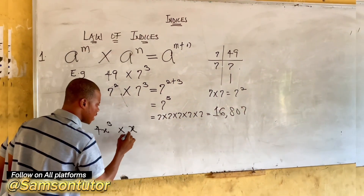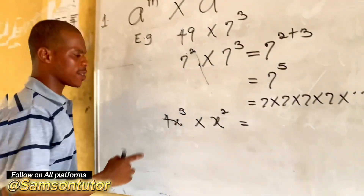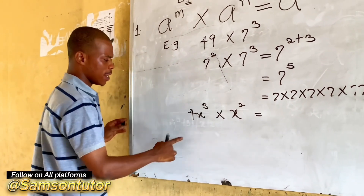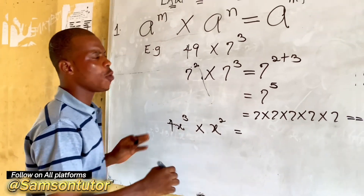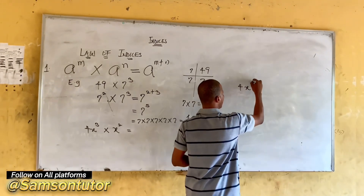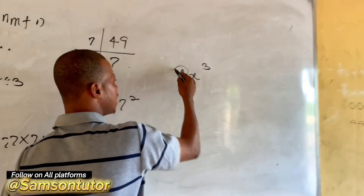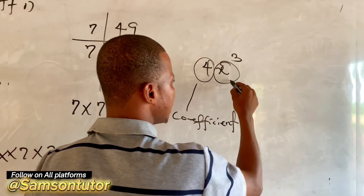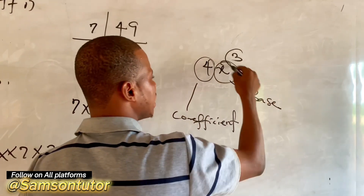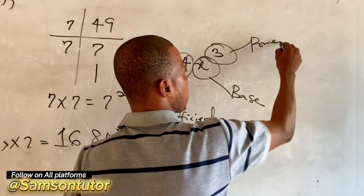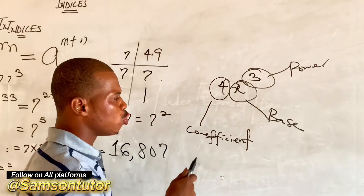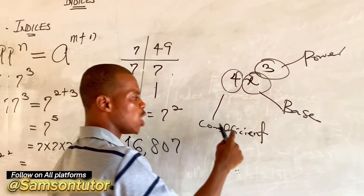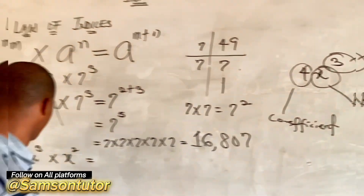Second example: 4x raised to power 3 times x raised to power 2. Here, 4 is a coefficient and x is the base. The three is the power. The only variable carrying the power is x; four is just a coefficient of the base.